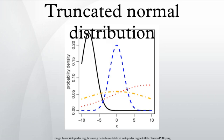In probability and statistics, the truncated normal distribution is the probability distribution of a normally distributed random variable whose value is either bounded below or above.